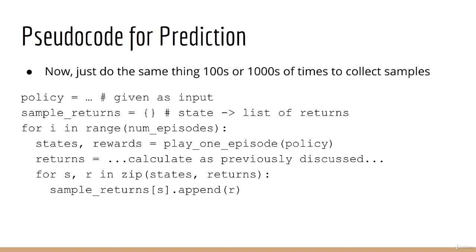Next, we loop through each state and return in corresponding order. For each return we encounter, we append that to the list of returns for that state. This loop is how we collect our samples.